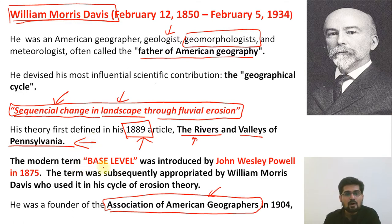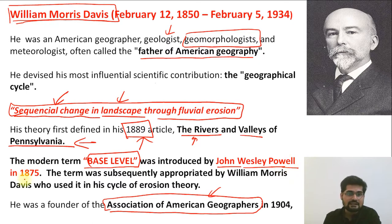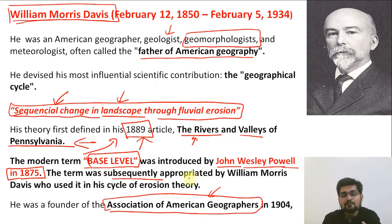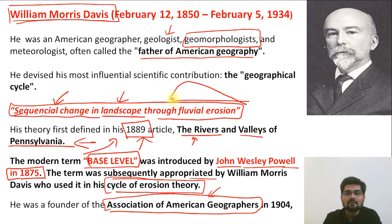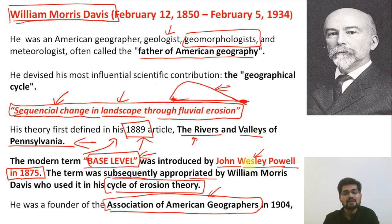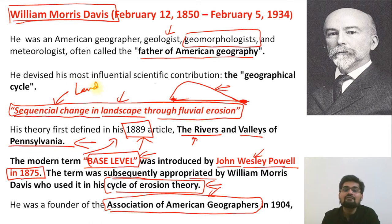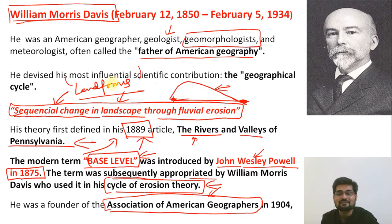The modern term 'base level' was introduced almost at the same time by John Wesley Powell in 1875. In 1889, Davis took this term and subsequently appropriated it in his cycle of erosion theory, in which the land rises from upliftment from a base level and is again lowered down to the base level through erosional processes. The base level concept was originally Powell's, but Davis worked out his own cycle of erosion theory, which became one of the most important theories in the study of landforms.